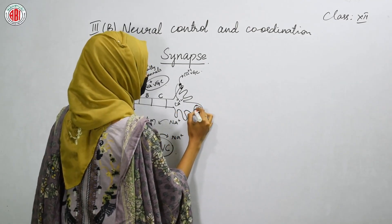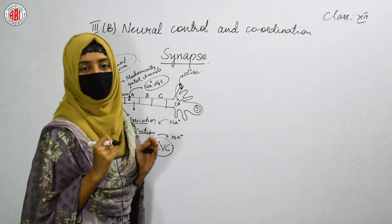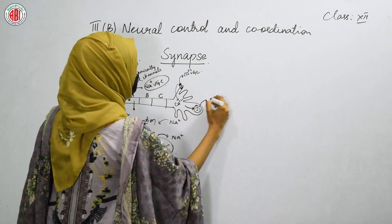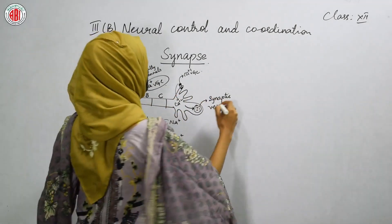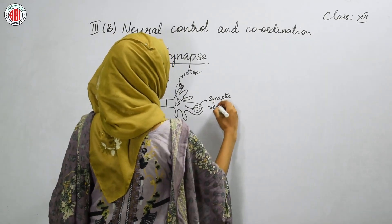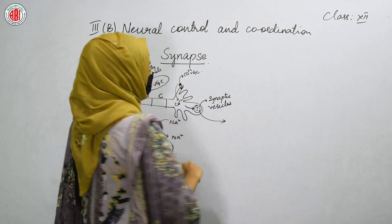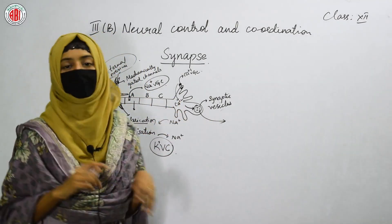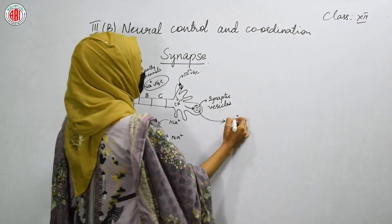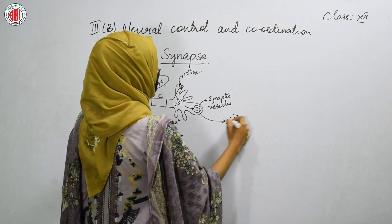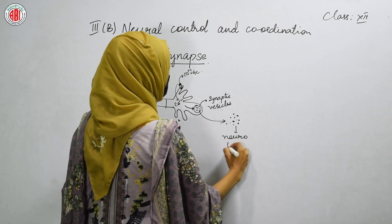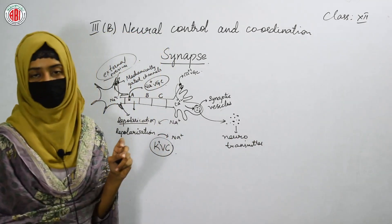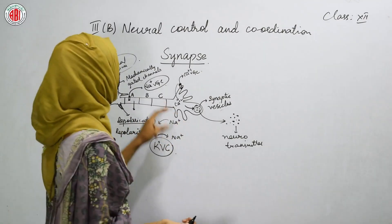Inside the synaptic vesicles, chemicals are found. When calcium enters into the axon terminal, it stimulates the synaptic vesicles to release the chemicals out. Once the synaptic vesicles get stimulated by the calcium, they start releasing the chemicals out of the axon terminals. These chemicals are called neurotransmitters. Neurotransmitters can be released out of the axon terminals due to the stimulation caused by the entry of calcium.